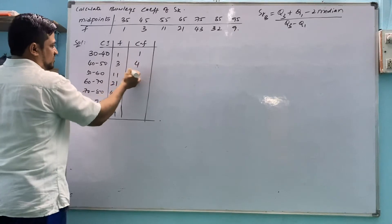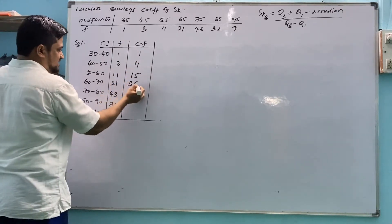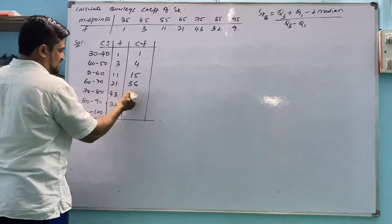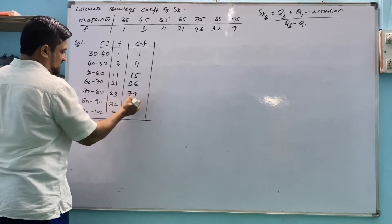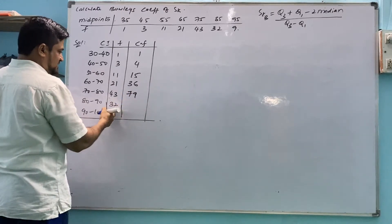Cumulative frequency: 1, 1 plus 3 is 4, 4 plus 11 is 15, this is 36, plus 43 is 79, 79 plus 32 is 111, plus 9 is 120.